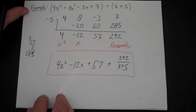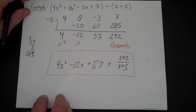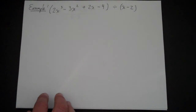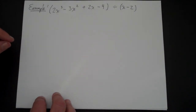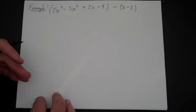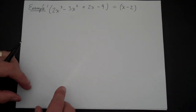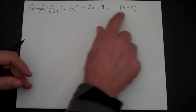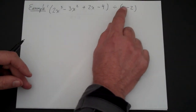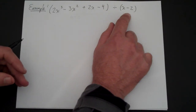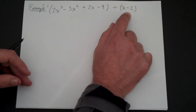It takes a little bit of time to get used to this process, but when you do, this becomes a very fast and easy way to do long division. You can always use polynomial long division — you never have to use synthetic division. Polynomial long division will always work. But if you're dividing by x plus a number or x minus a number, synthetic division is probably going to be the easier way of doing it.